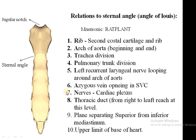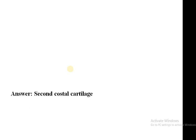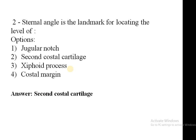Besides that, the base of the heart's upper limit is related here, and it is a plane which separates the superior mediastinum from the inferior mediastinum. So from this revision: the jugular notch is at the upper level of the manubrium, the xiphoid process is the lowest part of the sternum, and the costal margins are on both sides. The sternal angle is basically related to the second costal cartilage.